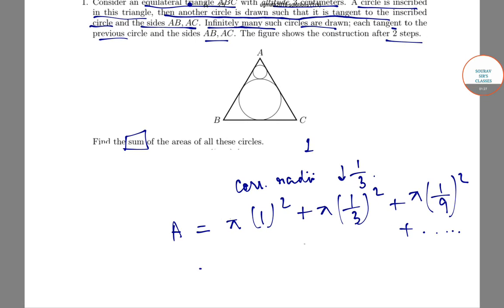You can write this as π + π(1/3)²[1 + (1/3)² + (1/9)² and so on].